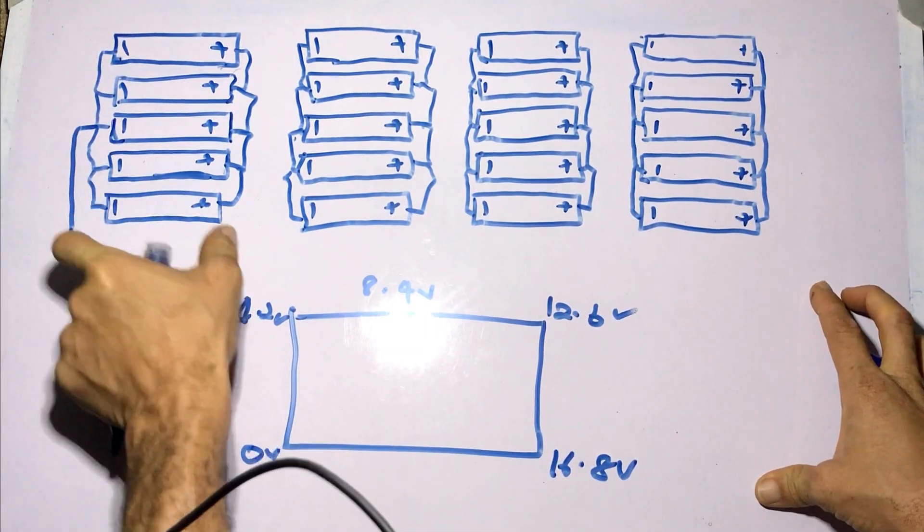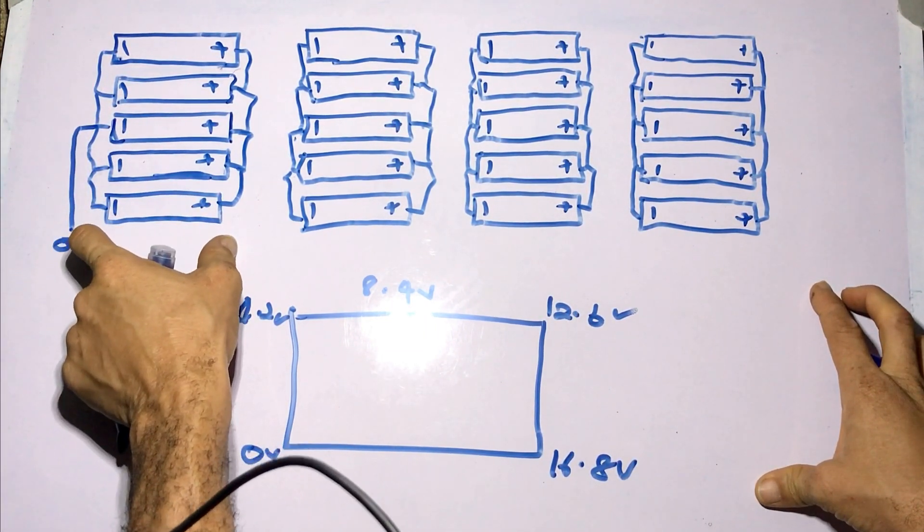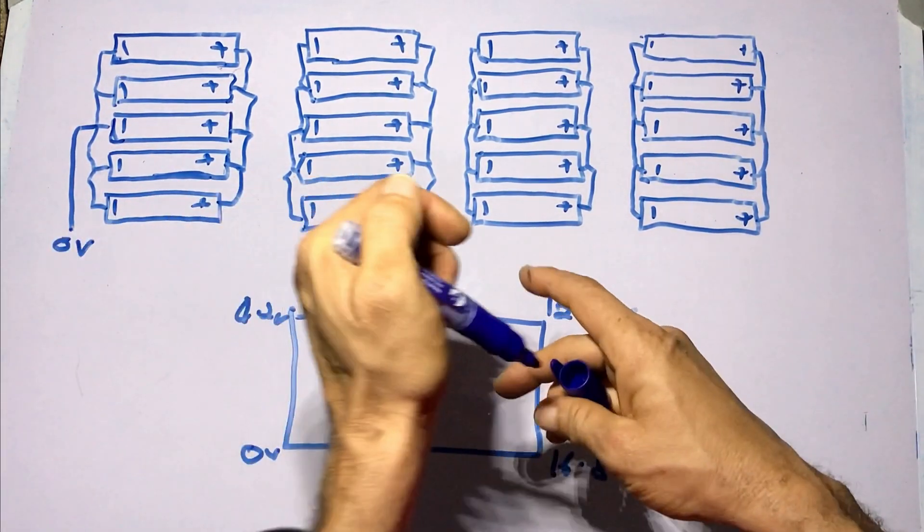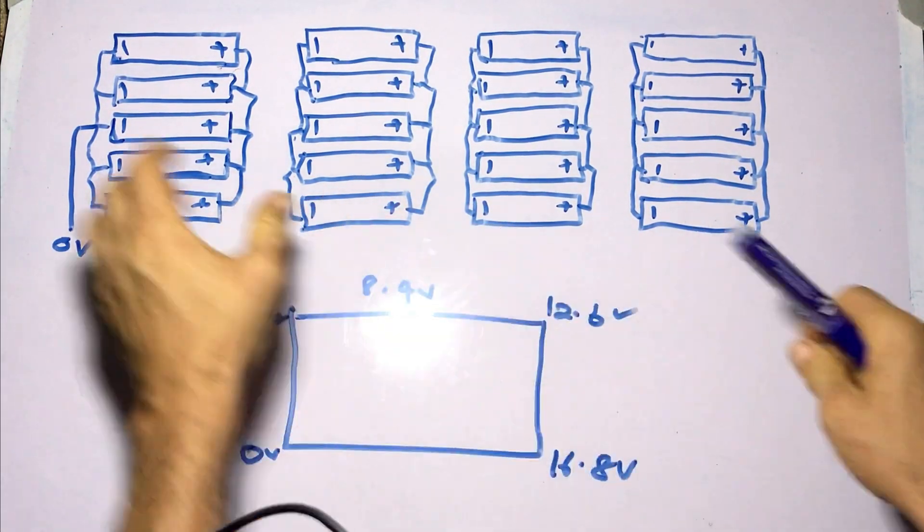Our first cell pack has five cells wired in parallel. So positive to positive and negative to negative to notch up the current of the pack. But the voltage remains the same.